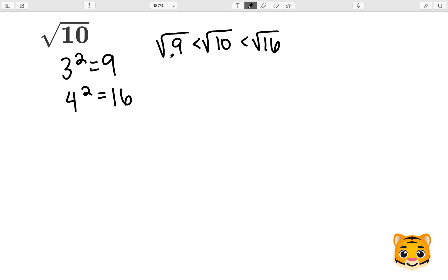Because 3 squared gives us 9, we can rewrite the square root of 9 as 3, and because 4 squared is 16, we can rewrite the square root of 16 as 4. Now we can see the square root of 10 is between 3 and 4.